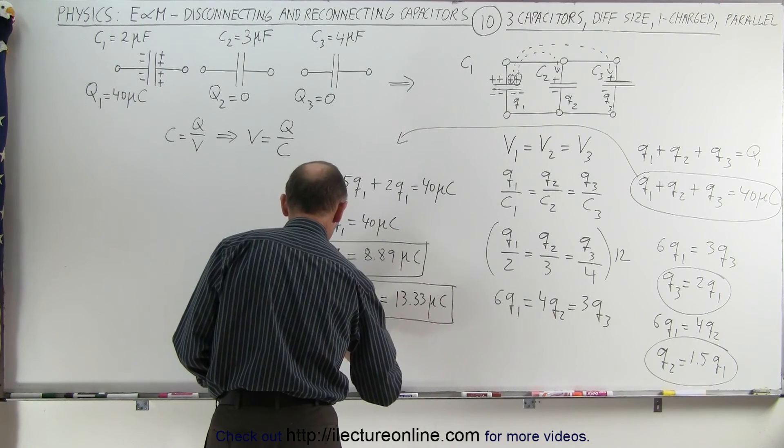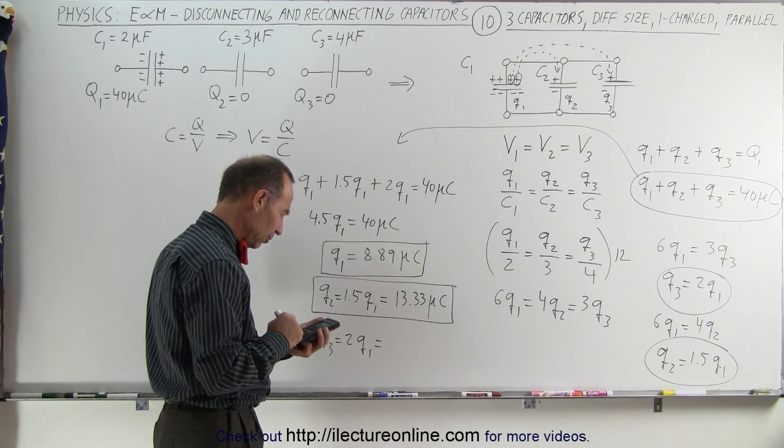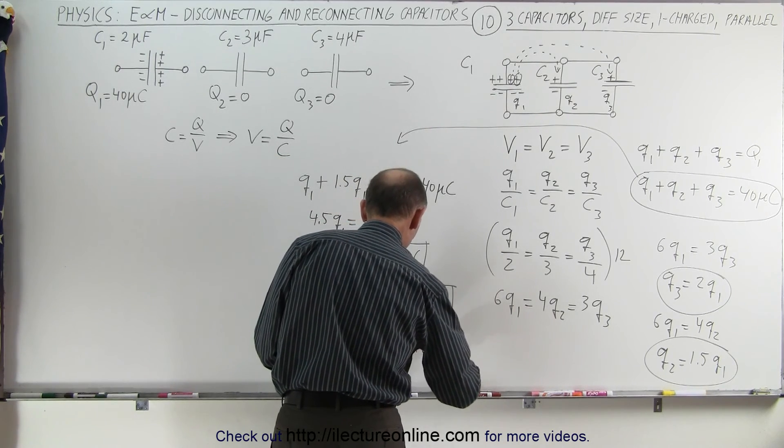And q3 which is equal to 2 times q1, so 2 times 8.89 gives 17.78 microcoulombs.